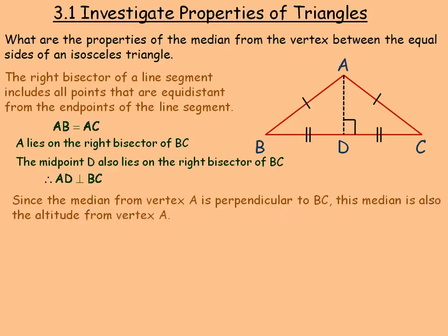Since the median AD is perpendicular to BC, this median is also the altitude from vertex A down to side BC.